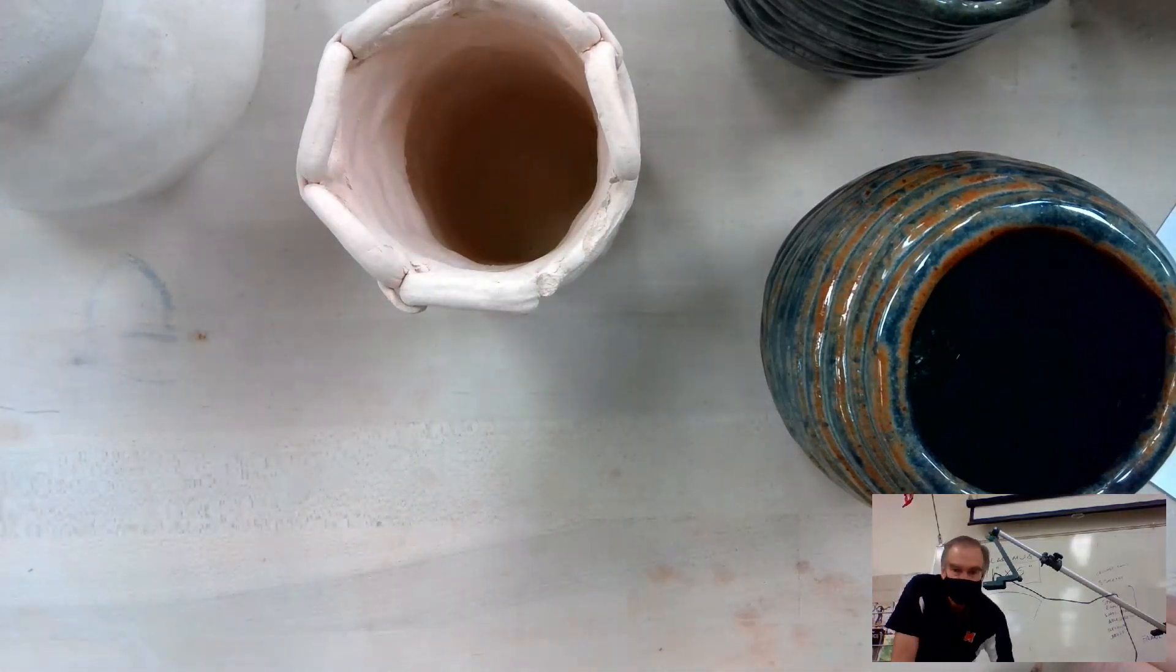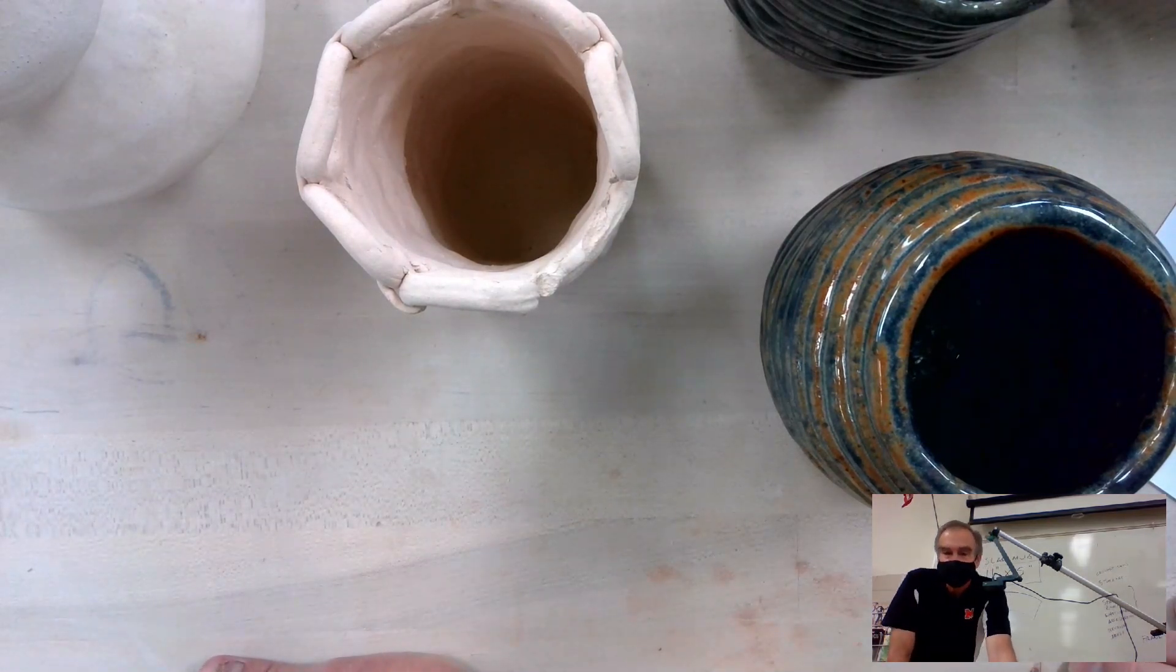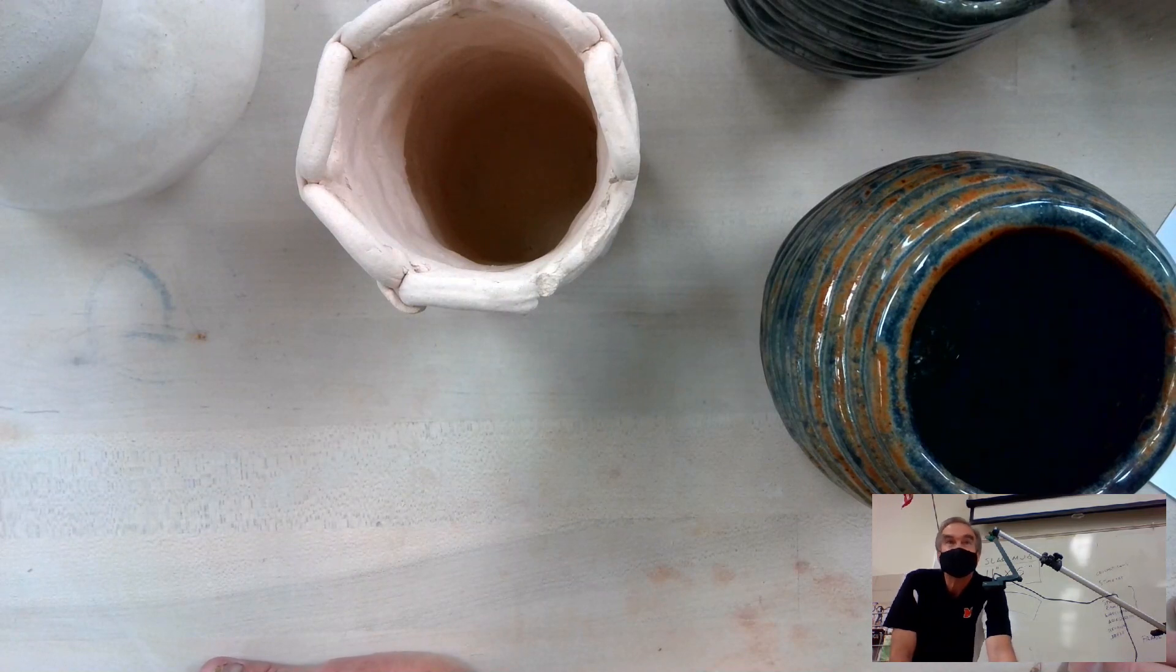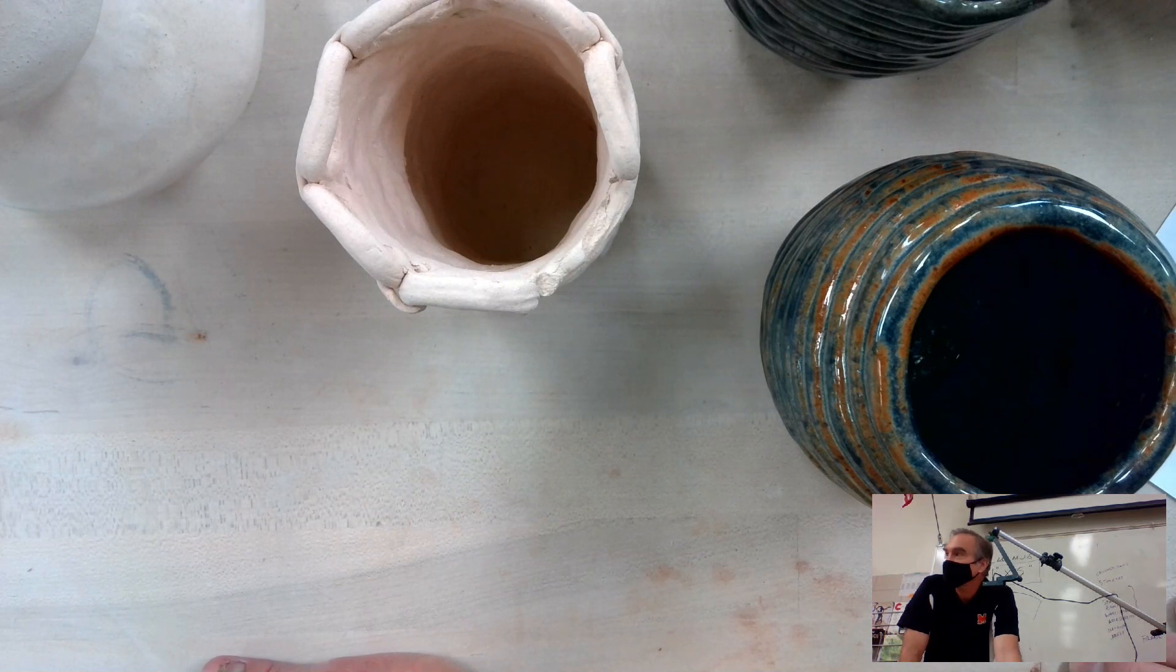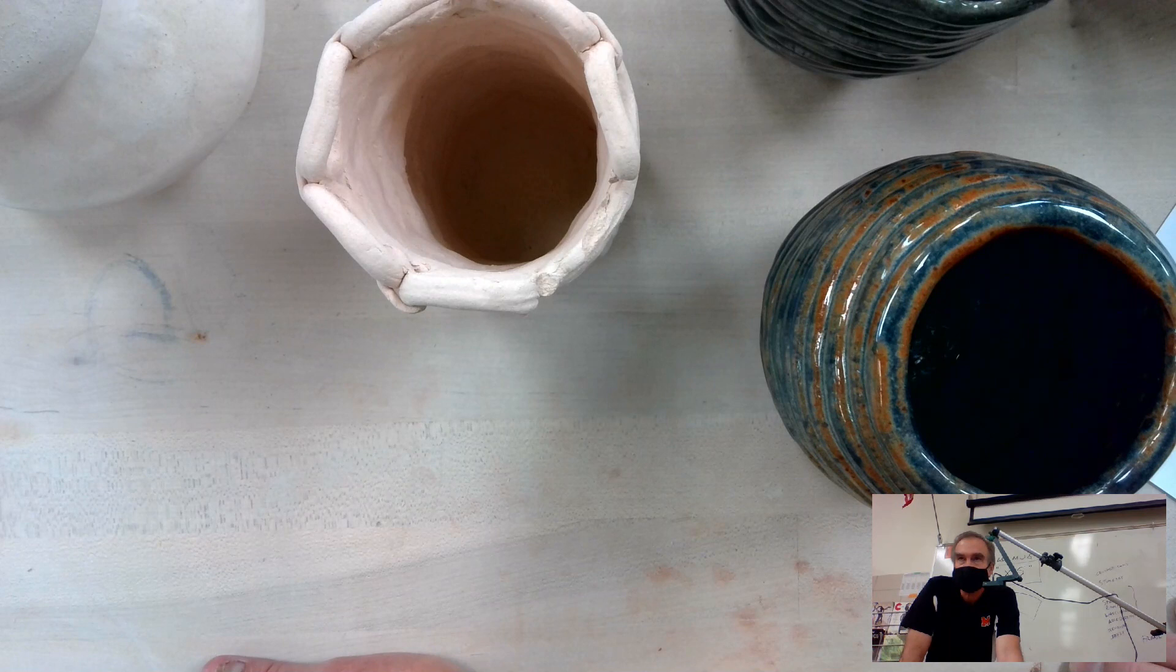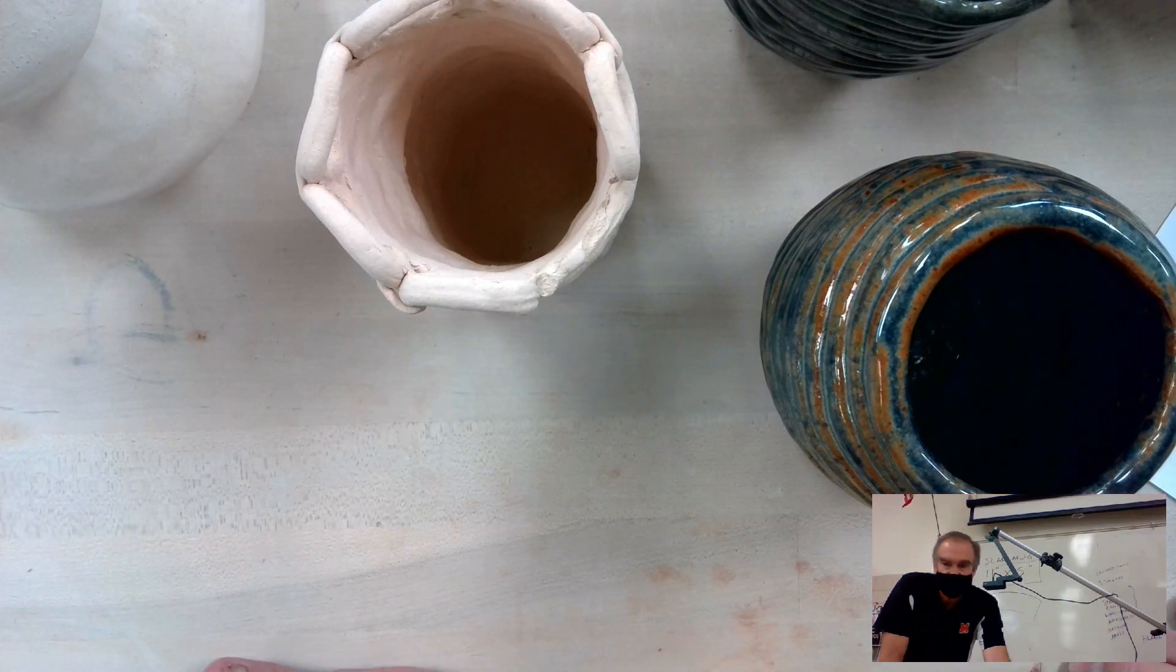So here we go, our next project we're going to work on is a little bit of a coil pot extension on that, literally extending it a little bit farther than we have before. Part of the difficulty and the challenge is making things a little bit bigger, and so this assignment will be to make a 10-inch pinch pot. 10 inches tall is what we're looking for.